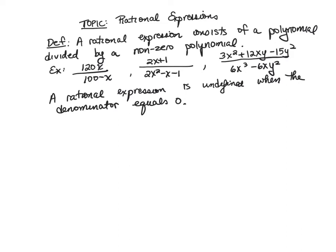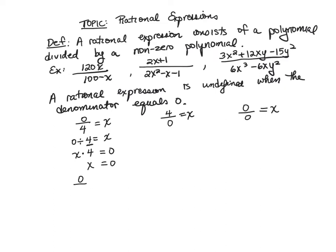Let's discuss why that should be the case. Numbers are polynomials, so let's consider these cases: zero divided by four, four divided by zero, or zero divided by zero. In mathematics, a fraction is a division problem, and we can always check by taking the answer and multiplying it by the denominator. What number times four equals zero? There is a unique answer — x equals zero. So zero divided by four equals zero.